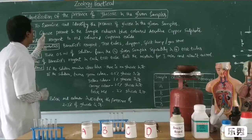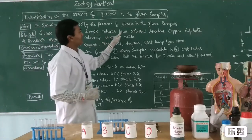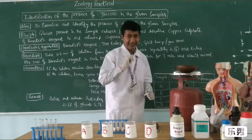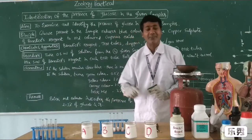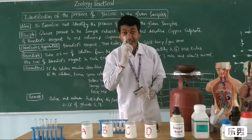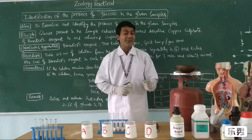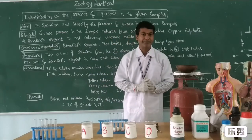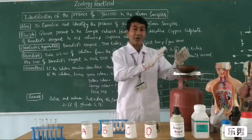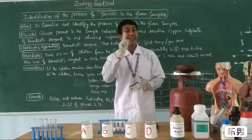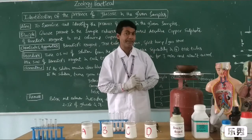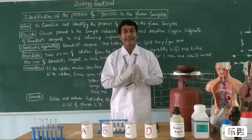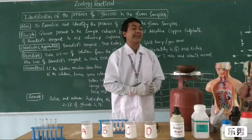The principle: glucose present in the sample reduces the blue-colored copper sulfate of Benedict's reagent. Here, to identify glucose from these samples, we use Benedict solution. Benedict solution is bluish in color. When you add Benedict to all the samples, all samples turn bluish. When heated on a water bath, if the solution remains blue, it indicates there is no glucose in the sample. If the blue-colored solution turns into red color, then that sample contains glucose.